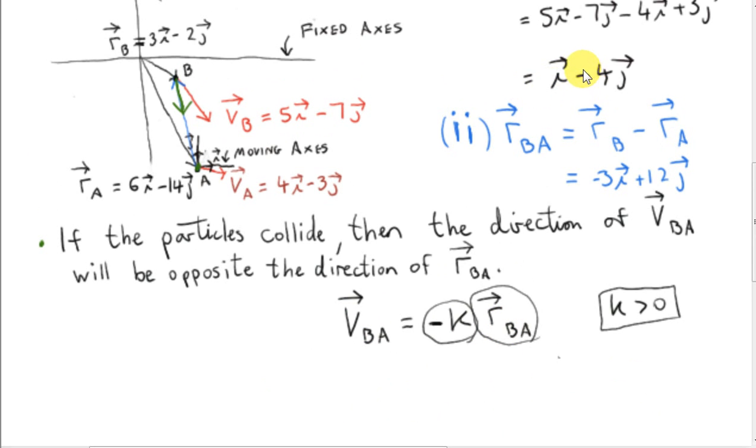Another way you could see that is if you just take the ratio of the components. So the ratio of the components of vector VBA is minus 4 over 1. I've just taken the j component and divided it by the i component. And if we do that for vector RBA, we get 12 over minus 3. Now minus 4 divided by 1 is minus 4. We get the same result for 12 divided by minus 3. So if these two numbers are the same, it turns out that the vectors point in opposite directions.